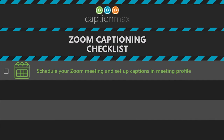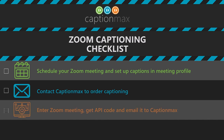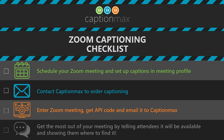Schedule your Zoom meeting and set up captions in your meeting profile. Contact CaptionMax to order captioning. Enter the Zoom meeting, get the API code, and email it to CaptionMax. And get the most out of your meeting by telling attendees Closed Captioning will be available and show them where to find it.